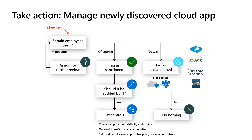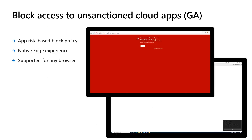If there is no way users should use an app, unsanctioning the app will be propagated directly to your endpoints, blocking any access to those web apps. Blocking access on the endpoint is already in general availability, providing app risk-based block policies. The block is available via a native experience in Edge Chromium, but also provides support for any other web browser.